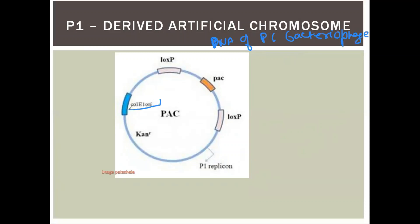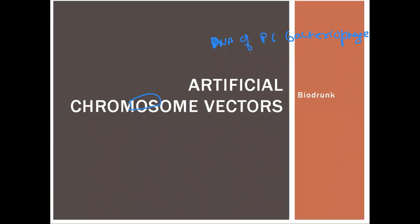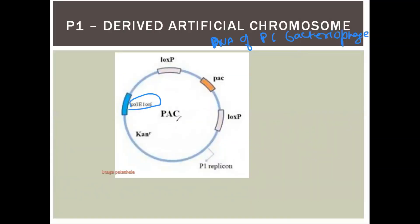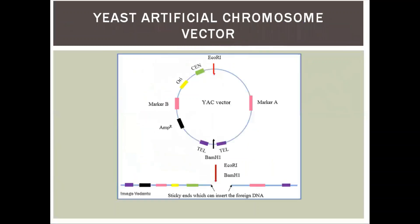The P1-derived Artificial Chromosome (PAC) contains an ORI — origin of replication — LogsP sequences, and three combination elements. It also has a CanR (chloramphenicol resistance) selectable marker and a P1-derived replicon, which is the replicating unit.